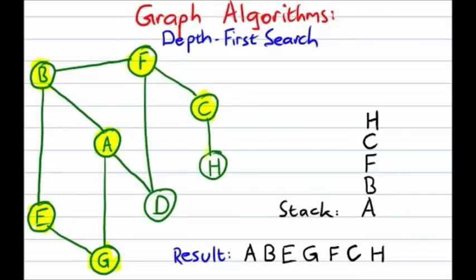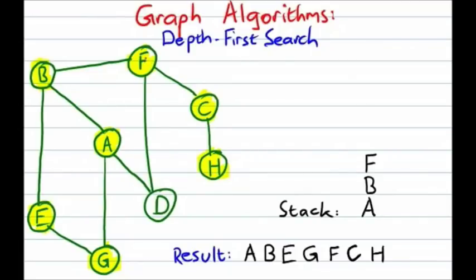We push H, visit it, and mark it as visited. From H, there's no place to go except back to C, but we've already been there, so we pop H off the stack, which takes us back to C. There's no place new to go from C, so we pop it off the stack, which takes us back to F. From F, there is a connection to a vertex we haven't visited yet — D. We push D onto the stack, visit it, and mark D as visited. But at D there's no place new to go, so we pop it off, taking us back to F. From F, we've already been everywhere we can, so we pop it off, taking us back to B.